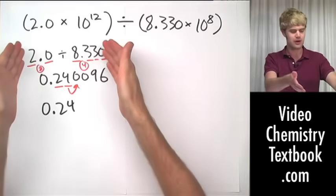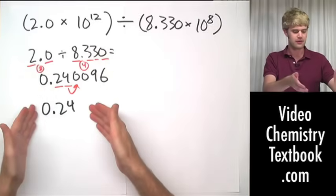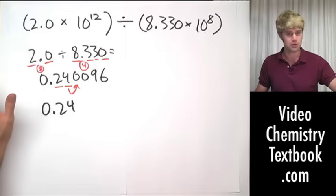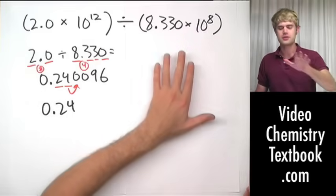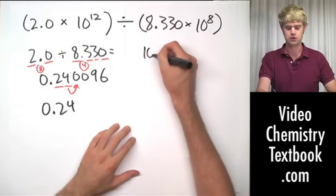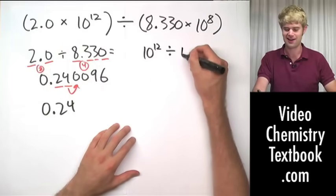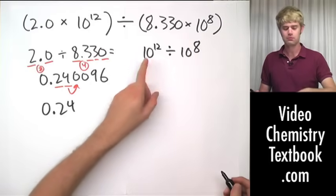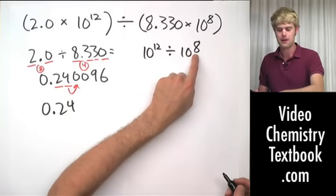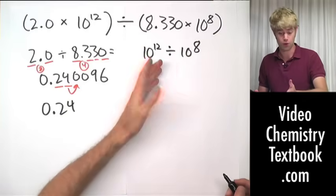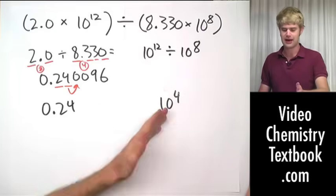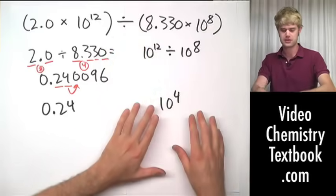When I did the significant figures and then the math and then the rounding, I didn't pay any attention to the 10 to the 12th or 10 to the 8th — it doesn't have anything to do with it. Now for the second part of the division equation, we look at the 10s raised to the power. We do 10 to the 12th divided by 10 to the 8th. When we divide numbers, we subtract their exponents: 12 minus 8 gives us 4, so the answer is 10 to the 4th. We don't worry at all about significant figures for this half of the problem.